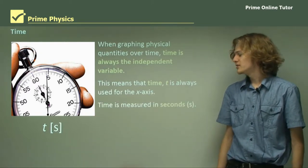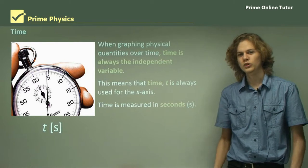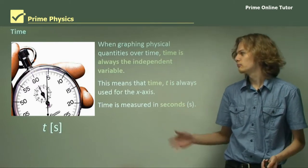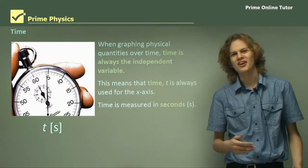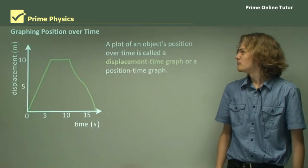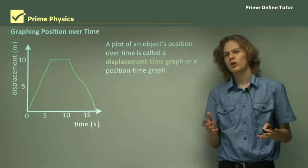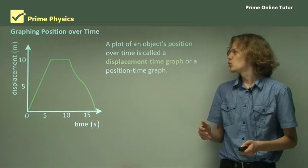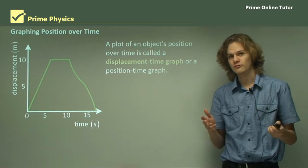We measure time in seconds, which of course is how we measure time on clocks and stopwatches and so on. Now, when we graph an object's position over time, it's called a displacement time graph.